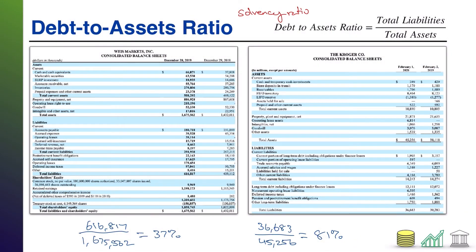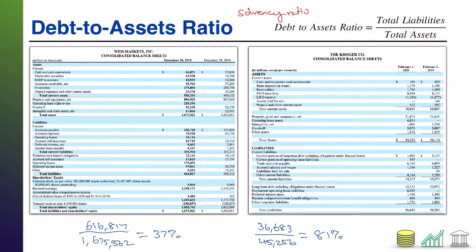What does this tell us about the company? What it explicitly tells you is how much of the company is funded by debt. That requires us taking a look at this equation: total liabilities over total assets. But remember, assets equal liabilities plus shareholders' equity. So we could rewrite this equation as liabilities over liabilities plus shareholders' equity. Liabilities is the debt the company has; shareholders' equity is the equity the company has.